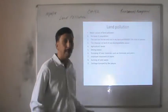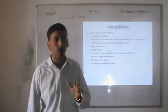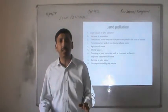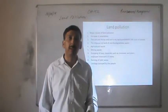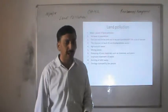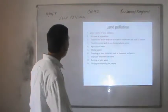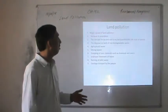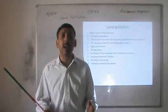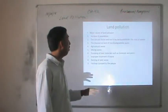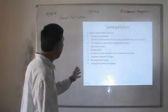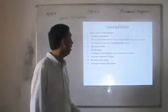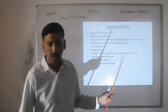In summary, the major causes of land pollution are: overpopulation leading to overproduction; the 'use and throw, not in my backyard' tendency; disposal of non-biodegradable waste; agricultural waste; mining waste; dumping of toxic materials such as chemicals and paints; improper treatment of waste; burning of solid waste; and garbage dumped by people without proper treatment.